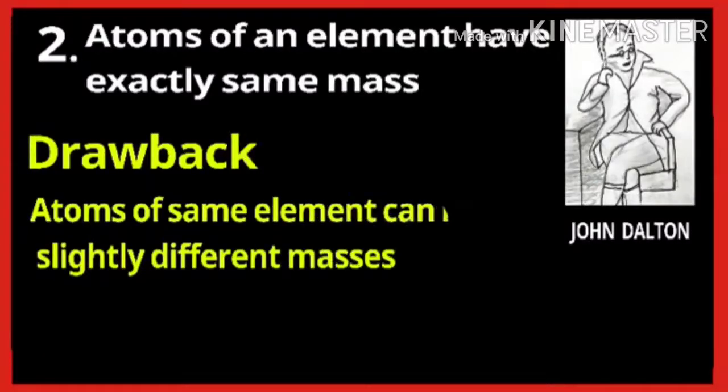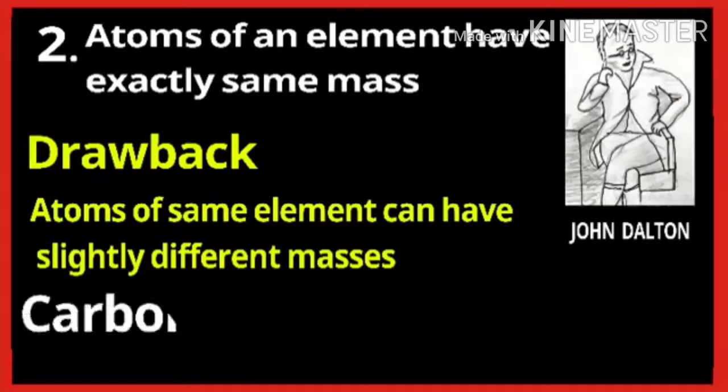For example, there are three isotopes of carbon. Isotopes are the atoms of the same element which have the same atomic number but different mass numbers.